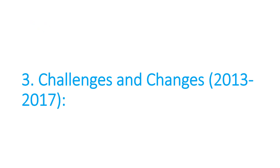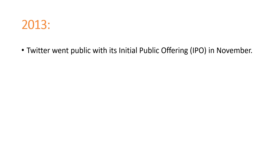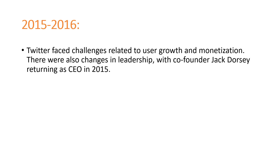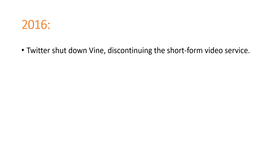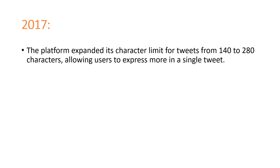The third point covers challenges and changes from 2013 to 2017. In 2013, Twitter went public with its initial public offering (IPO) in November. In 2015 to 2016, Twitter faced challenges related to user growth and monetization. There were also changes in leadership, with co-founder Jack Dorsey returning as CEO in 2015. In 2016, Twitter shut down and discontinued the Vine video service. In 2017, the platform expanded its character limit from 140 to 280 characters, allowing users to express more in a single tweet.